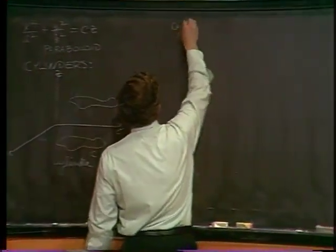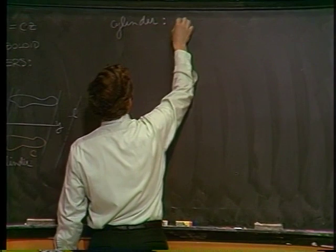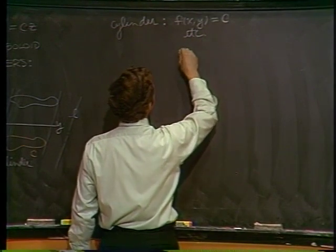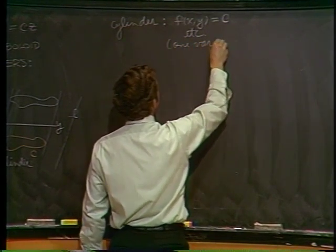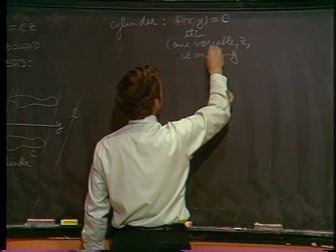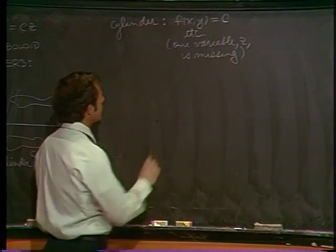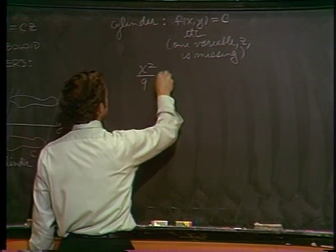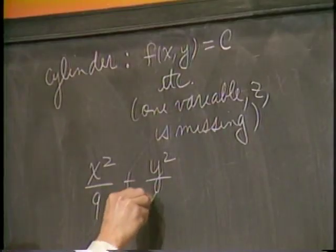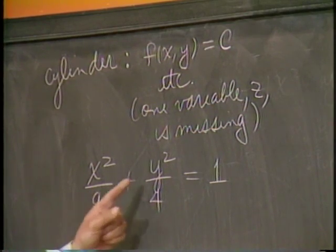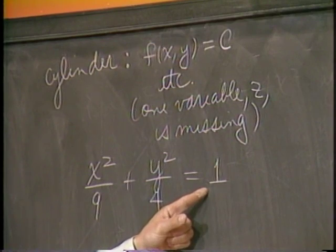A cylinder for us will be probably given by an equation something like this. I'll put an et cetera in here, but basically what happens is that one variable, in this case z, is missing from your equation. One variable is missing. For example, if I take x squared over 9 plus y squared over 4, set that equal to 1. A couple of weeks ago, you would have said that that is an ellipse. You would have been correct, but now this is f of x, y equal a constant in 3 space. That turns out to be a cylinder.